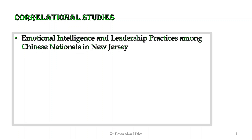Let us look at topics related to correlational design. The first topic that reflects a correlational study is emotional intelligence and leadership practices among Chinese nationals in New Jersey. This research topic has two variables: one is emotional intelligence and the second is leadership practices. The study aims to find the relationship between these two variables, making it a correlational study.